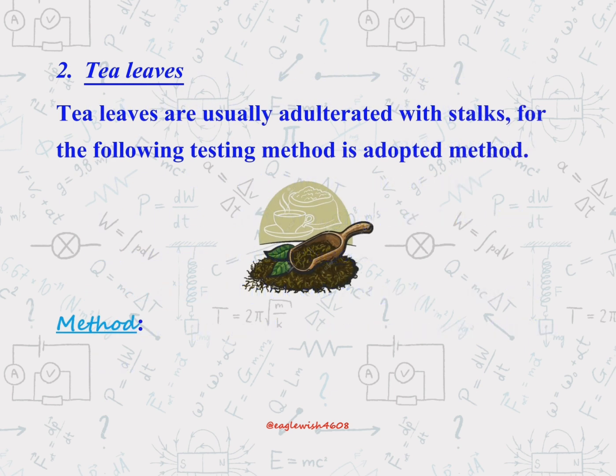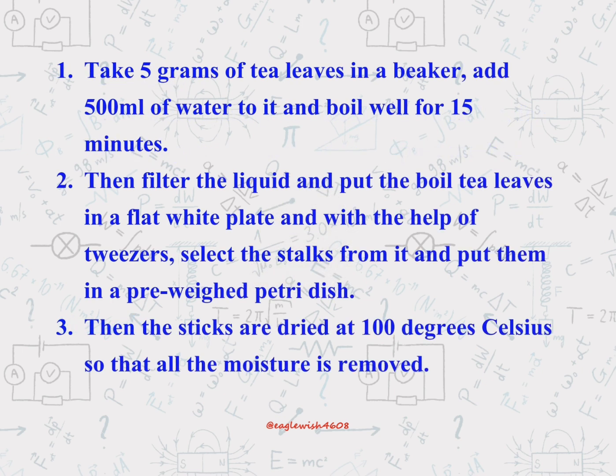Next, we have tea leaves, which are commonly adulterated with stalks. We'll also write about the chemical method or procedure to demonstrate adulterants in the tea leaves.